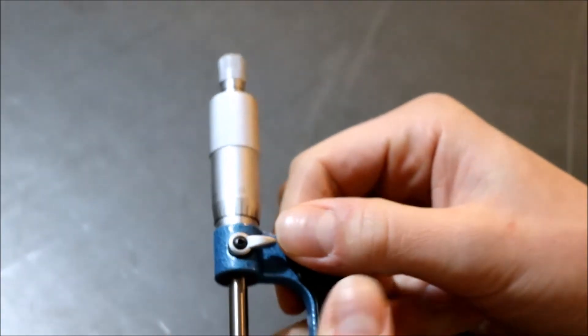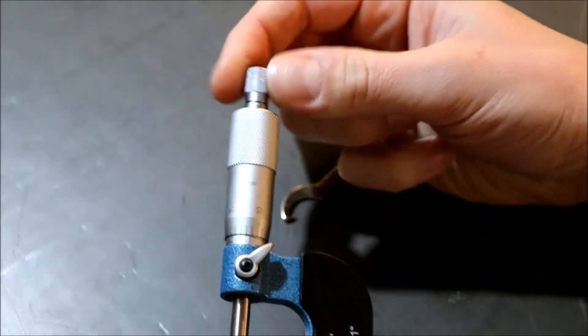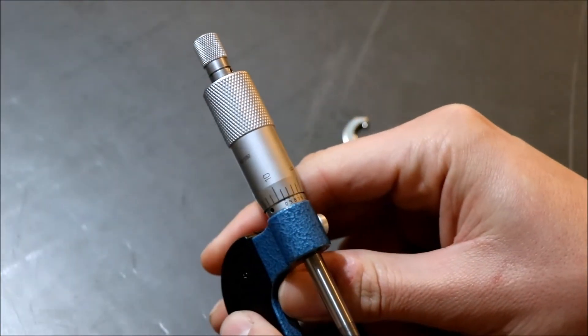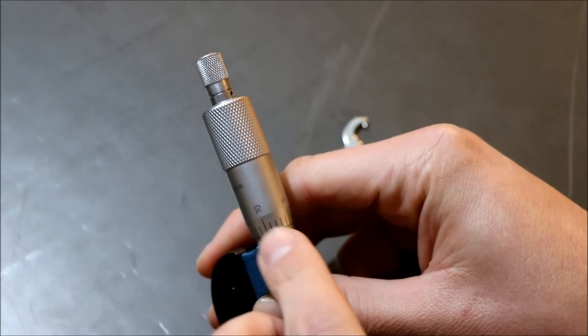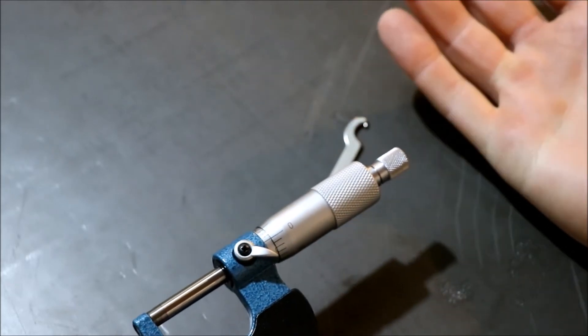All right, so now I can unlock my barrel, run it through till it clicks, just double check everything here. Make sure that the zero lines up with the nine, and that's all you have to do to zero your micrometer.